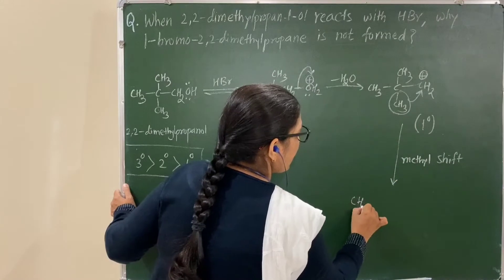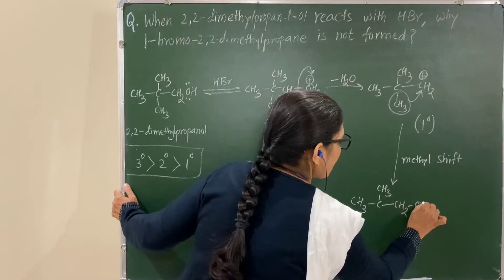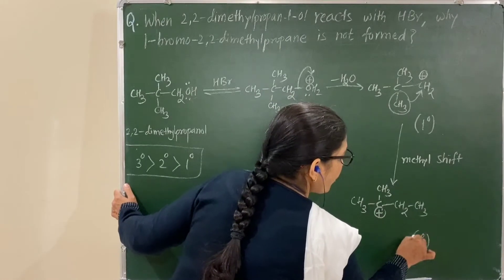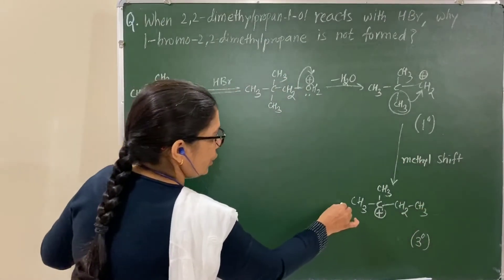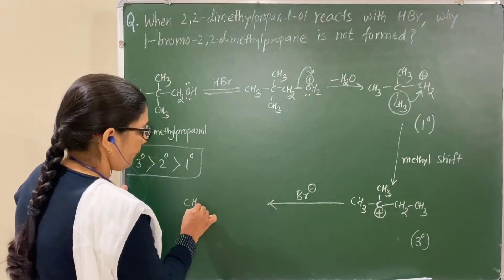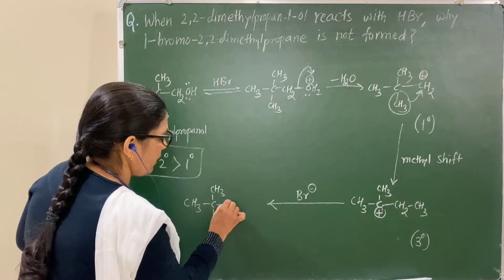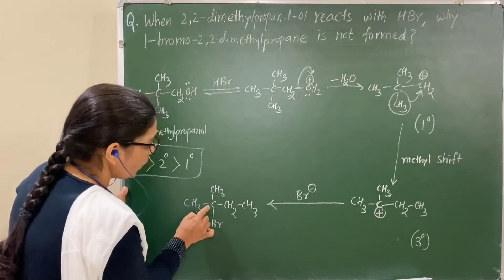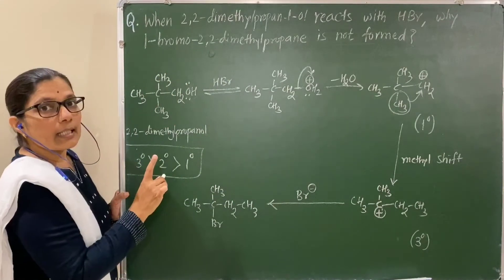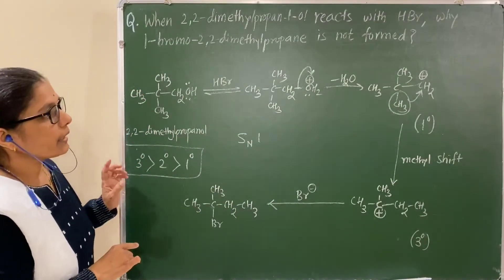A tertiary carbocation is formed, which is more stable. The primary carbocation converts into tertiary, which is more stable. Now Br minus ion attacks here to form 2-bromo-2-methylbutane, not the other product. This is an SN1 mechanism.